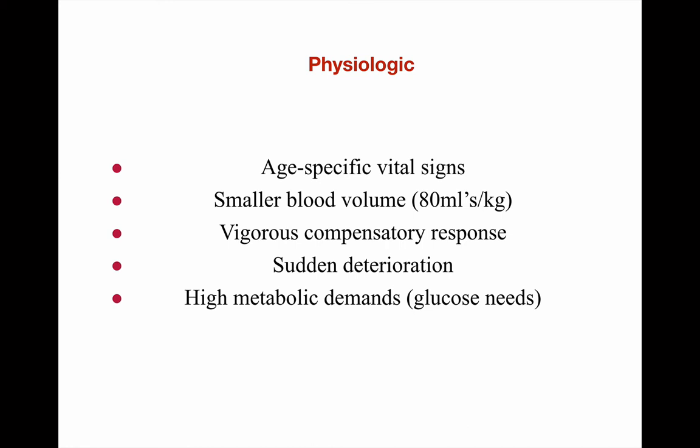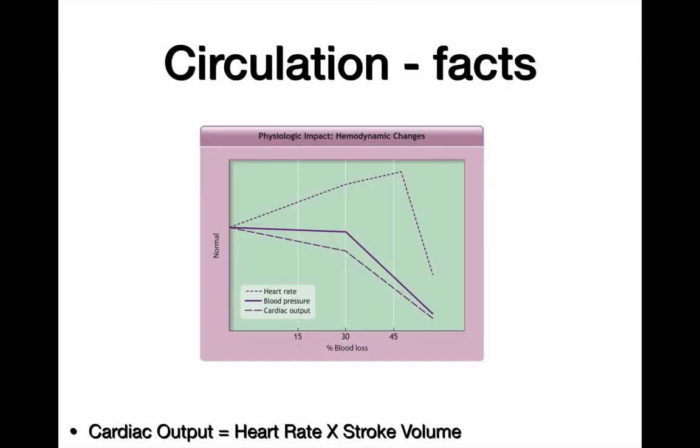Physiologically, vital signs are age-specific. Blood volume is about 80 ml/kg, so you can't eyeball blood loss in kids. They have such a strong compensatory response that you're going to see a sudden deterioration. The harbinger of doom — the thing that tells you they're about to drop their pressure — is low glucose. They have higher metabolic demands.